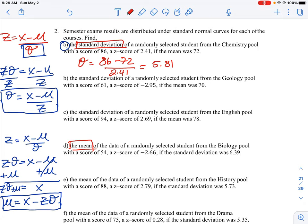And then question D, we want to find the mean. So we know the mean is equal to the letter mu. And we start by using the score, which is our data point, 54 minus the z score. So the z score here is negative 2.66. So watch that negative sign when it comes in. And then the standard deviation is 6.39.